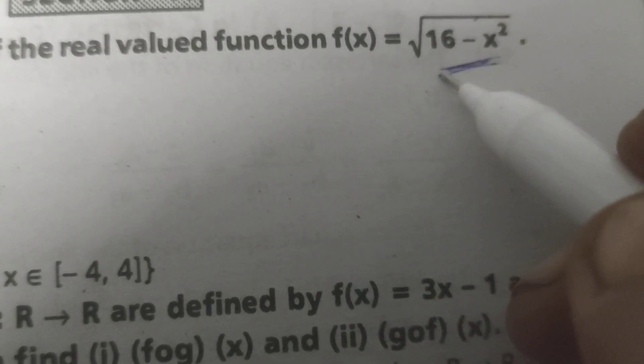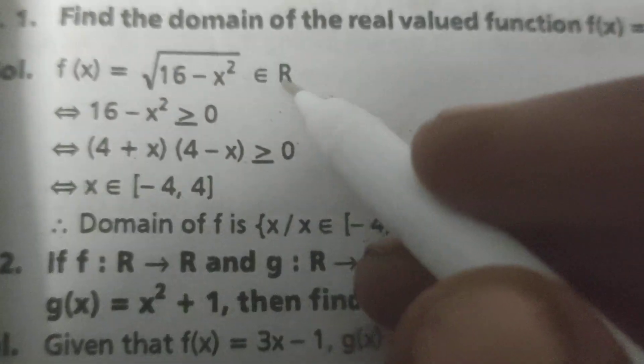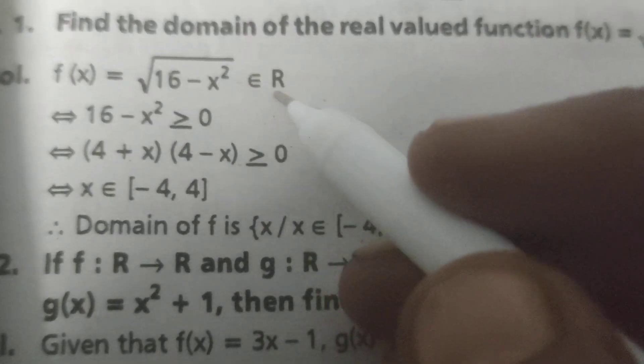Now find out the domain of this function. For the formula, write here f(x) equals the square root of 16 minus x squared. This is a real valued function, so it belongs to R.